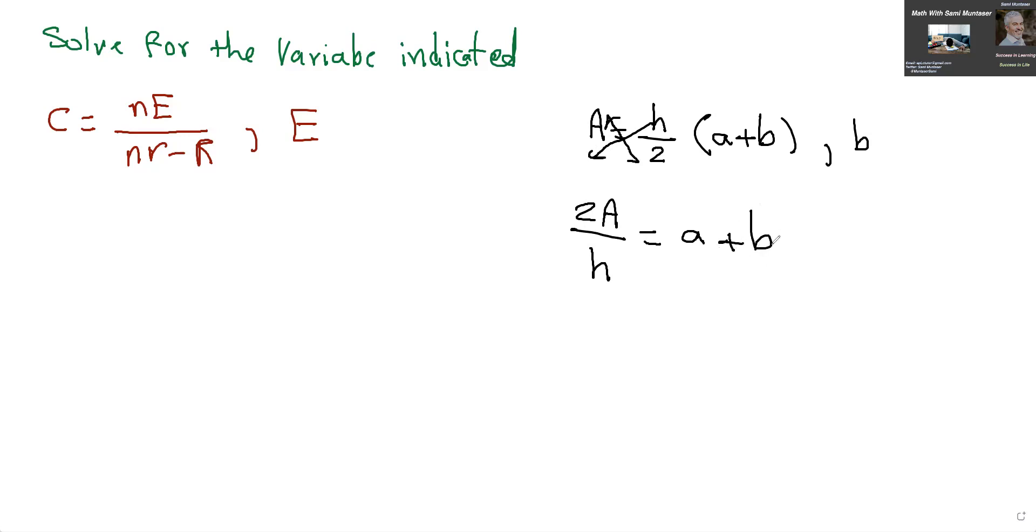So to solve for B, you got to move the A to the other side. So it becomes 2A over H minus A equals B. So you could leave it as this, or you could do a common denominator. If you're doing common denominator, B would equal, the common denominator is H. So 2A stays the same because it already has H on the bottom of it, and H divided by 1 is H times A is AH. So 2A minus AH over H, and that's the answer for this.